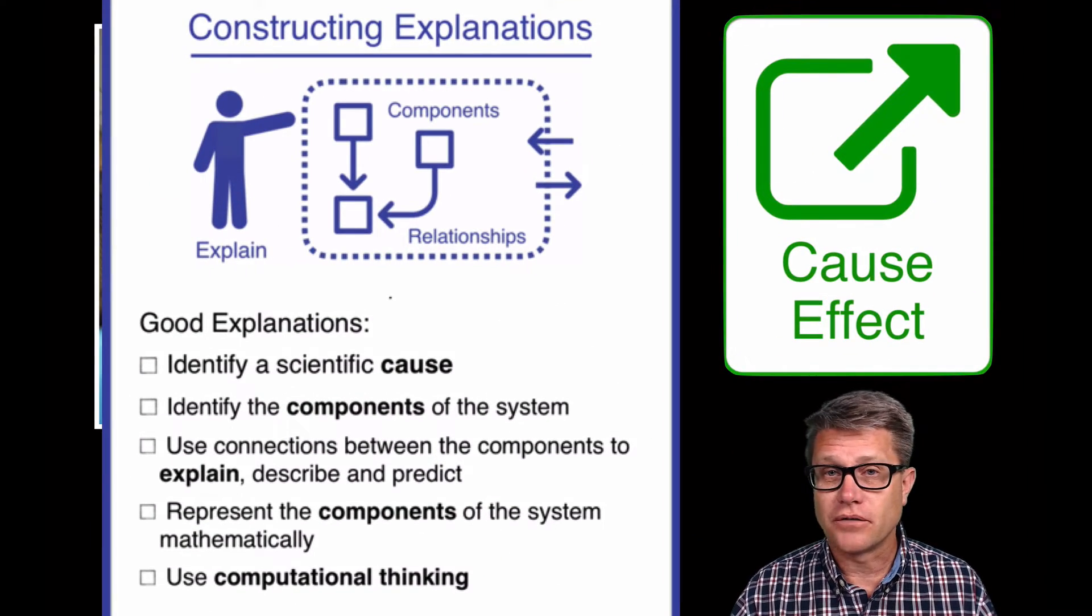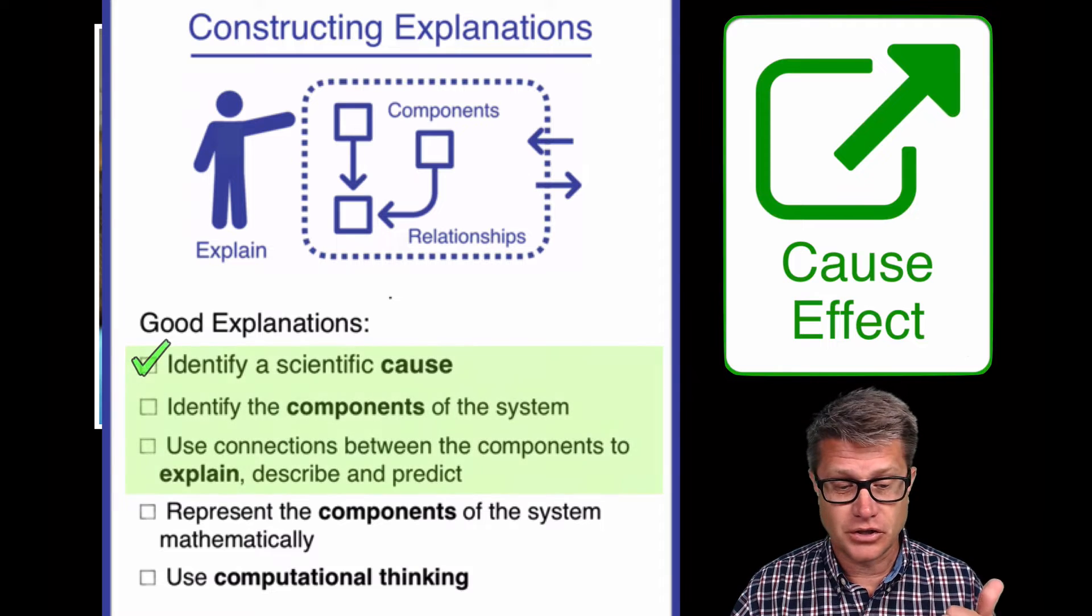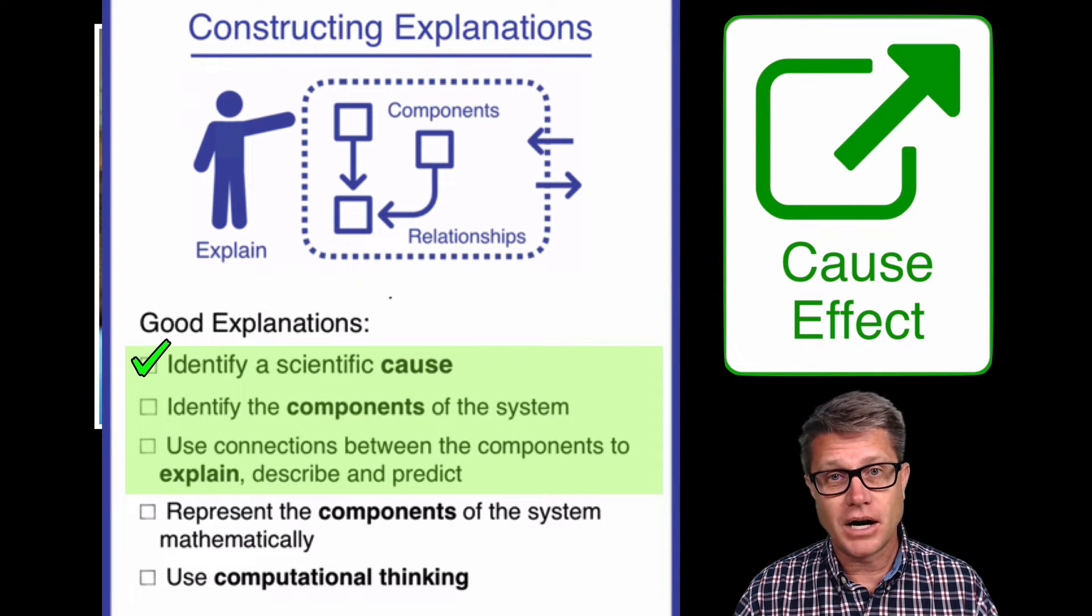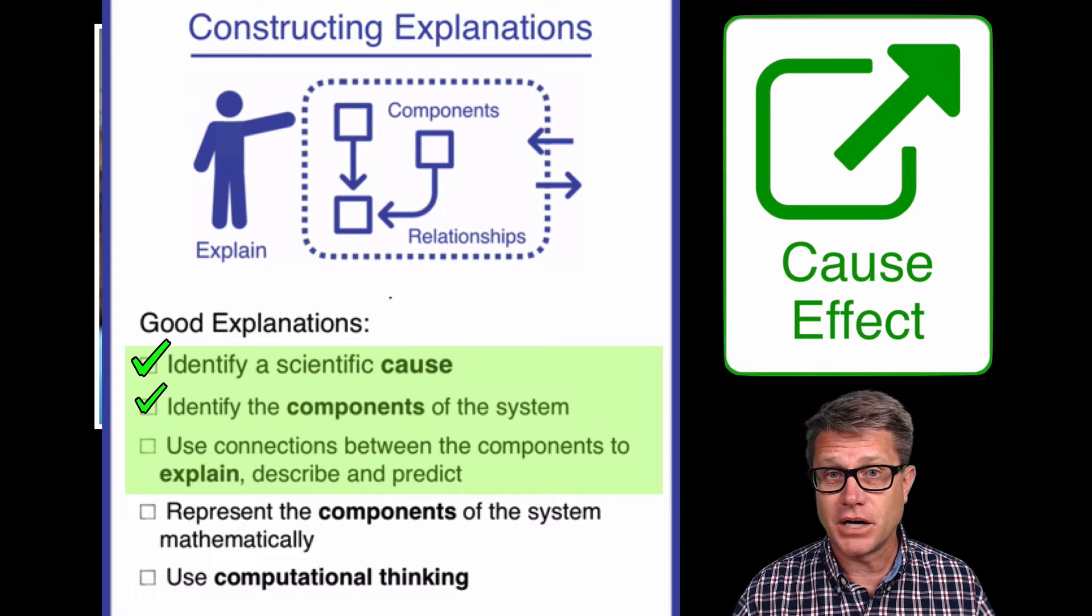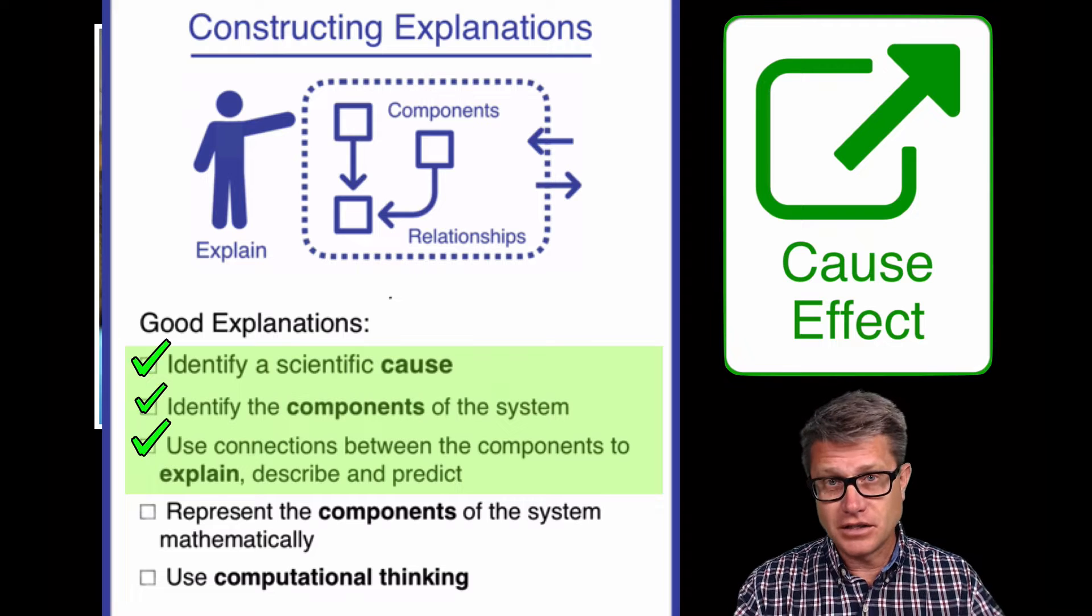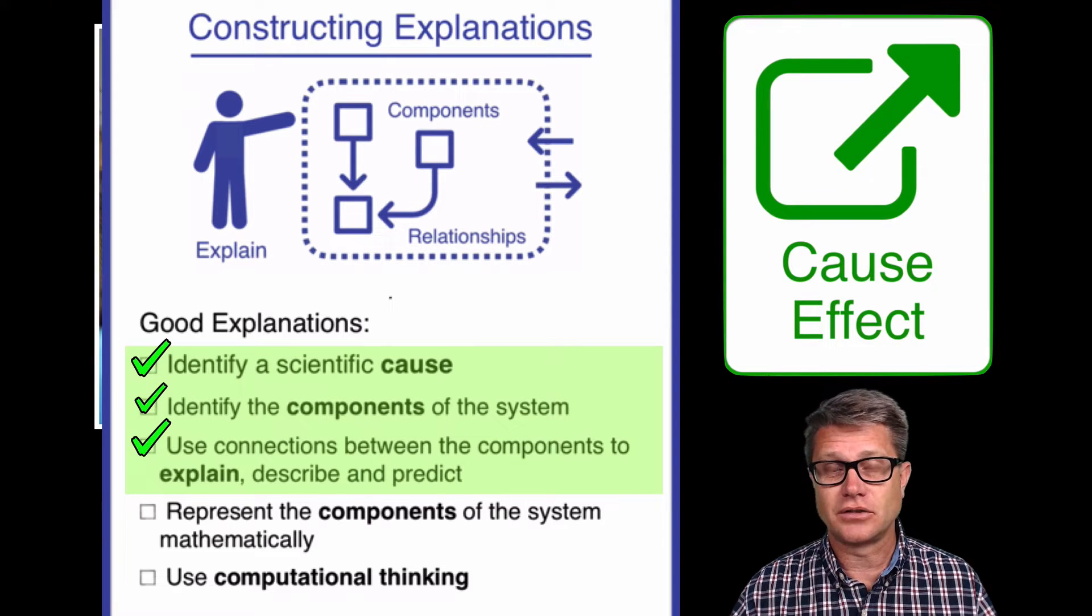If we look at a rubric for what makes a good explanation, it should always have a cause. And then if we're looking at the model that you're trying to explain, you should identify the relevant components of the model, and then how do those connections explain, describe, and predict. These would be the elements of a good explanatory model.